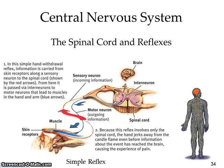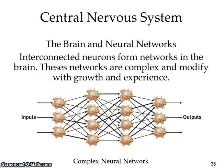The spinal cord is like the information highway of your body, sending messages throughout. If your spinal cord is damaged, communication stops at that point. People who have broken their neck can still live, but with the help of medical equipment — all information below the break ceases to exist for that person's body. In the central nervous system, interconnected neurons form networks in the brain that are complex and modify with growth and experience, so our body can adapt to changes.